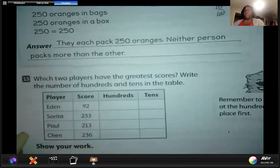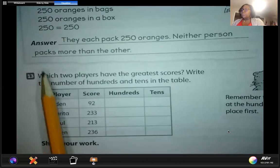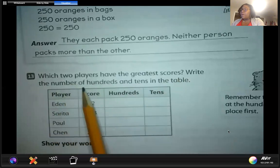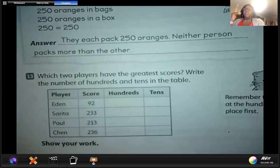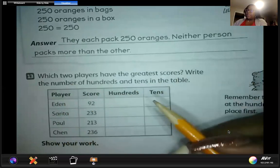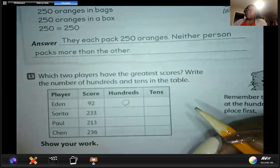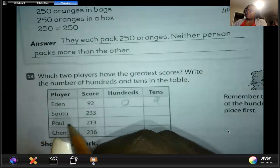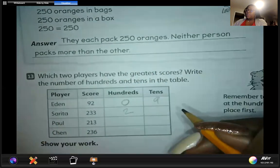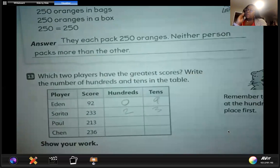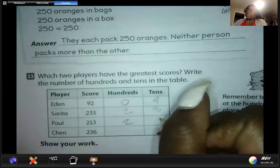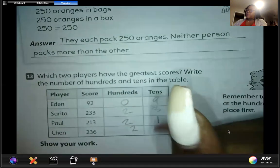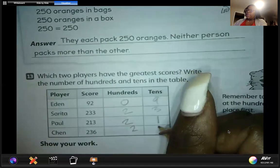Let's look at question number 13. Which two players have the greatest score? Write the number of hundreds and tens in the table. Eden has no hundreds and nine tens. Sarita has two hundreds and three tens. Paul has two hundreds and one tens, and Chan has two hundreds and three tens.